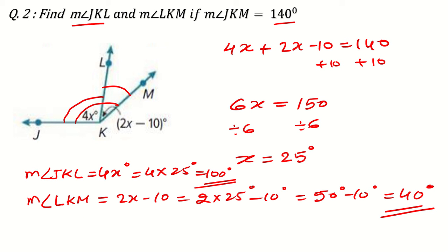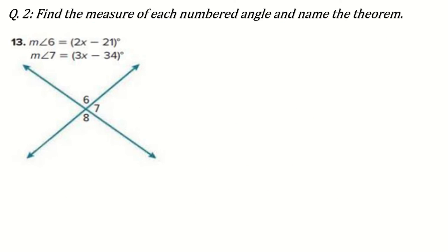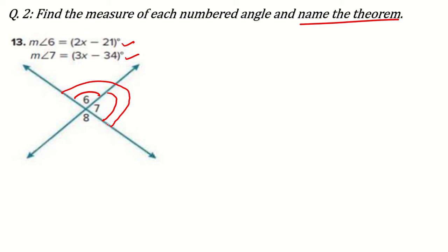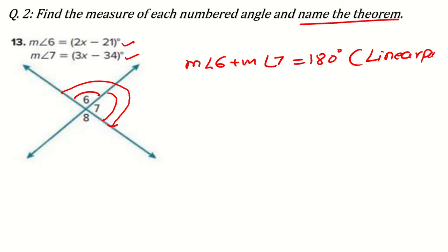Next: find the measure of each numbered angle and name the theorem. We need to find angles 6, 7, and 8. You can see that angles 6 and 7 together form a complete straight line, so they are a linear pair. You should mention the rule: the measurement of angle 6 plus the measurement of angle 7 equals 180 degrees because they are a linear pair.